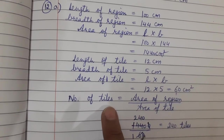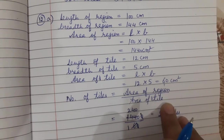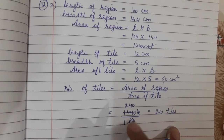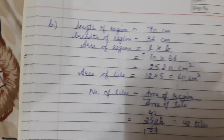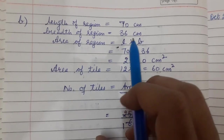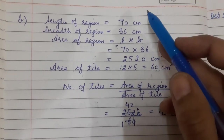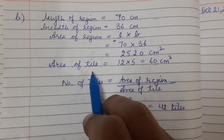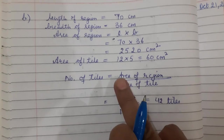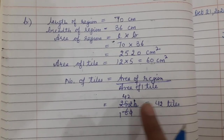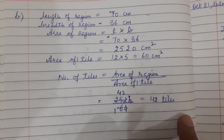To find the number of tiles, area of region is divided by area of one tile: 14400 divided by 60 = 240 tiles. For part B: length of region is 70 cm, breadth is 36 cm. Area of region is 70 × 36 = 2520 cm square. Area of one tile is 12 × 5 = 60 cm square. Number of tiles = 2520 divided by 60 = 42 tiles.